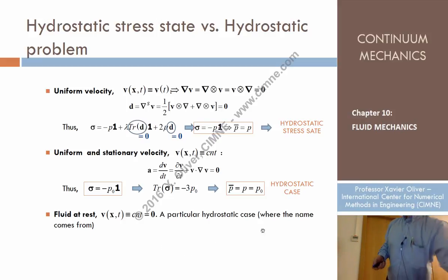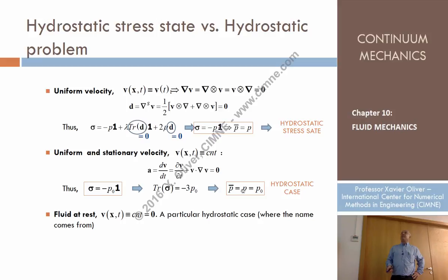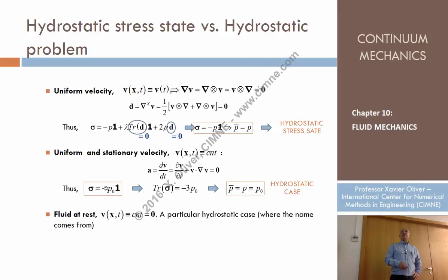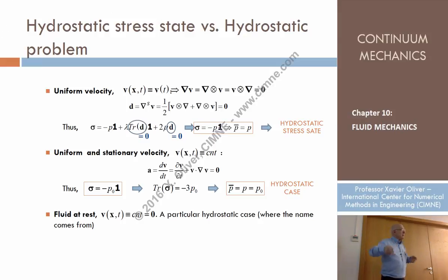Of course, a specific case is when that constant velocity is zero, and that is where the hydrostatic case takes its name — water at rest. So we are considering the case of fluids at constant velocity, in which the pressure is called the hydrostatic pressure. The trace of the stresses is minus 3P₀, so the mean pressure, one-third of that, equals the hydrostatic pressure, which also equals the thermodynamic pressure.